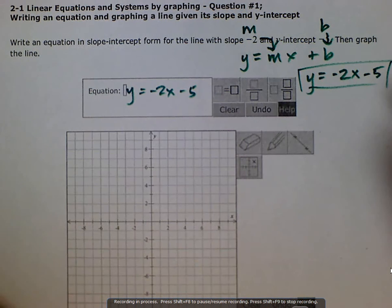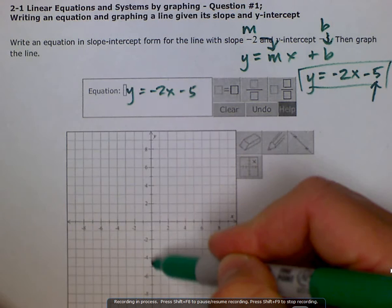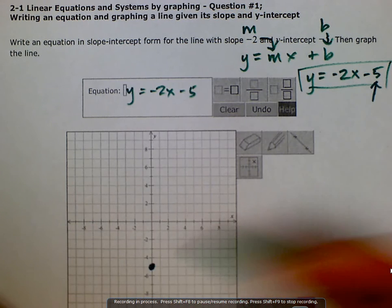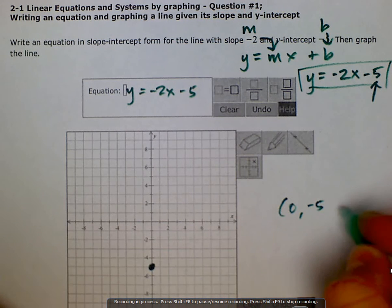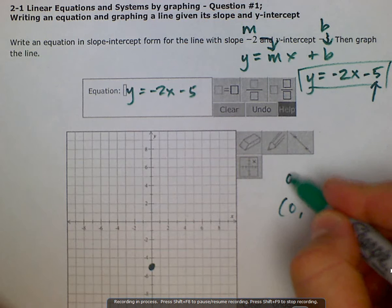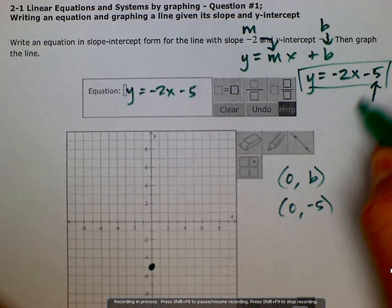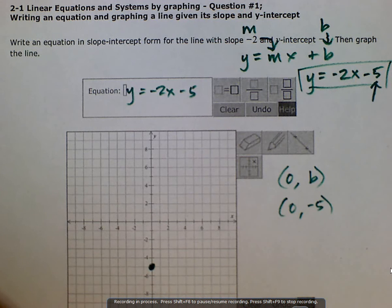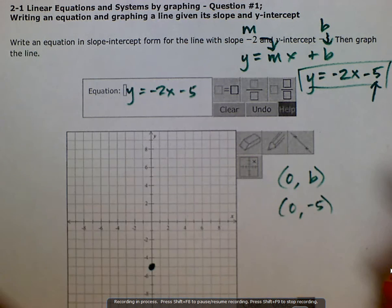Our y-intercept is our start point, so we would come on our y-axis to negative 5, and we could write that as a coordinate (0, -5). We always write our y-intercept as a coordinate (0, b), so our -5 comes in for the y-value, and it's always going to be 0 for the x-value because it lies on the y-axis.